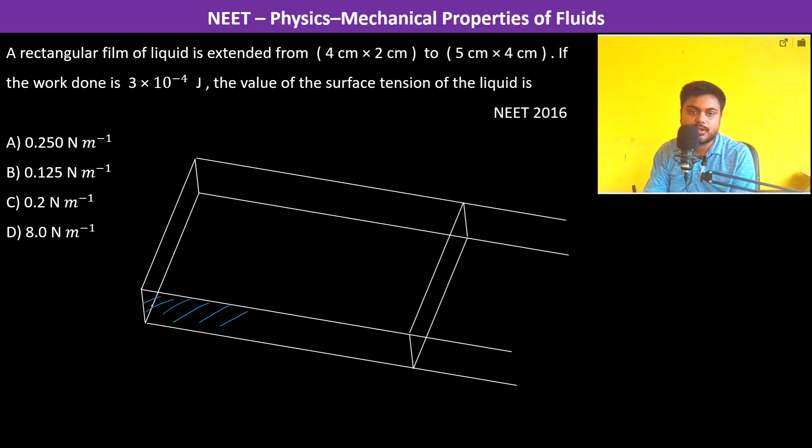This is the width or height of it. This is the upper surface and this is the lower surface. When we are extending this, basically the upper surface and the lower surface both of them have increment in the surface area.